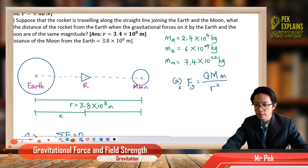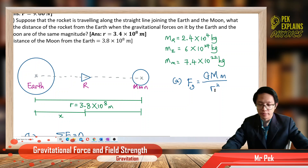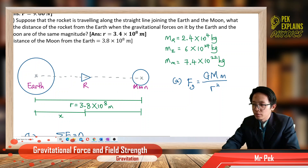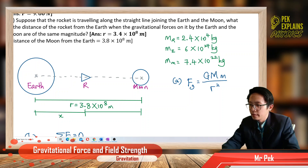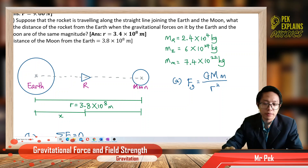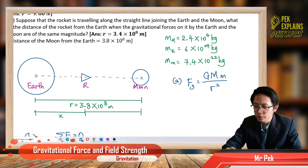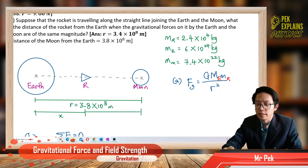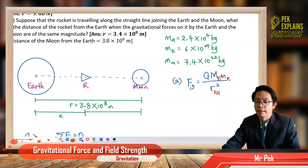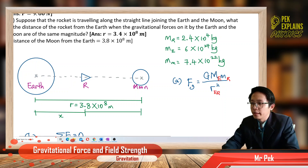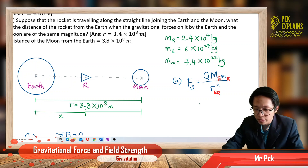The formula is Fg = GMm/r². We use the mass of Earth, the mass of the rocket, and the distance between Earth and rocket. Now let's substitute all the values.